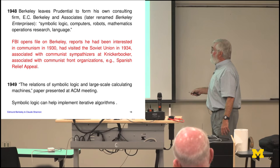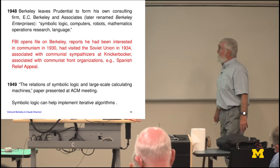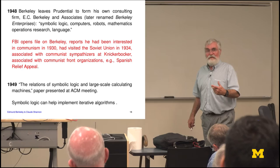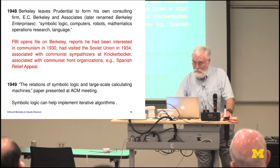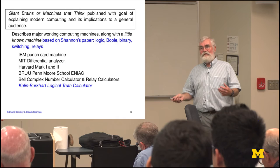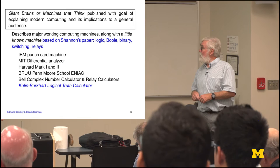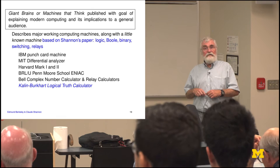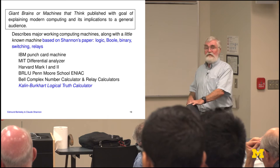Berkeley continued talking about symbolic logic and large-scale computing, noting there had been one little computer by unknowns that used the ideas but it certainly wasn't widespread yet. Then Berkeley published his book, Giant Brains. I'm old enough to have friends slightly older who read that book and were profoundly influenced by it. The idea was to explain what he called Giant Brains — big computers — to the general public. It was still a pretty good seller; many technical people bought it to find out the general view.